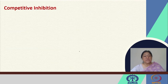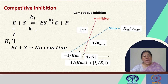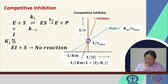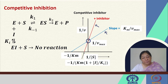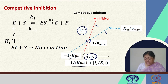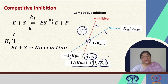In the Lineweaver-Burk double reciprocal plot, the Y-intercept (1/Vmax) shows an intersection of the two lines — the blue line for no inhibitor and the red line for the reaction with inhibitor. In the original case we had 1/KM; now we have an inhibitor concentration and a dissociation constant KI, giving us a modified Michaelis constant.